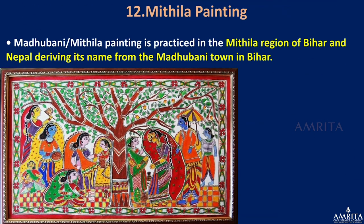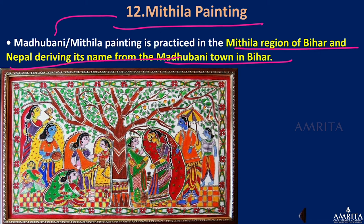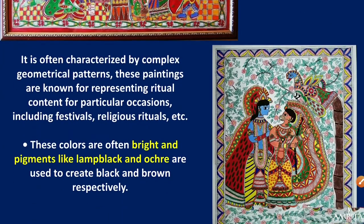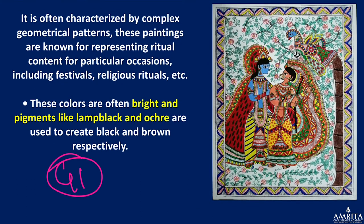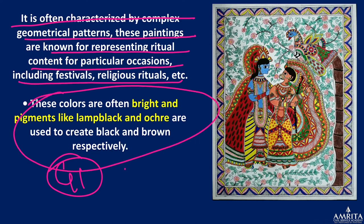Next is Mithila painting or Madhubani painting, associated with the Mithila region — specifically the Madhubani town — in the Mithila region of Bihar. It has received a GI tag. It is often characterized by complex geometrical patterns and is known for representing ritual content for particular occasions including festivals and religious rituals. Colors are bright; pigments like lamp black and ochre are used to create black and brown respectively.